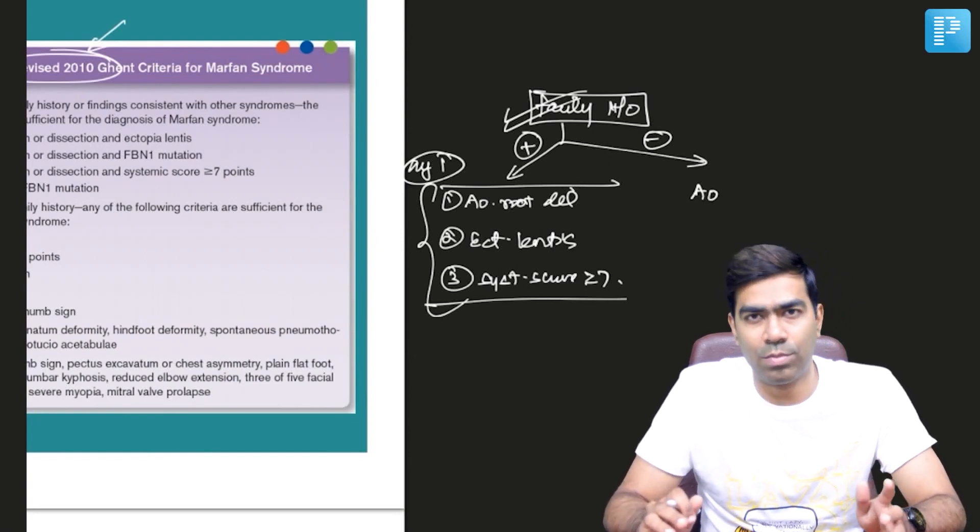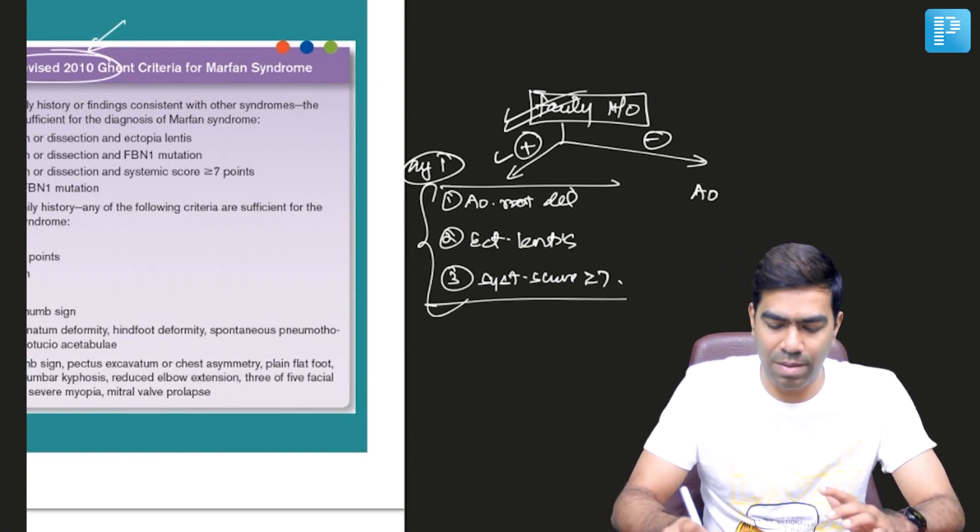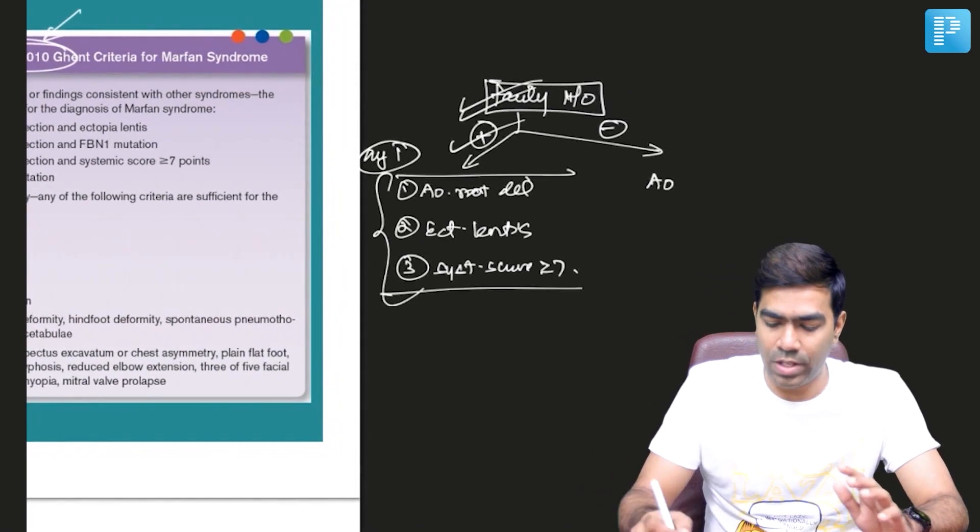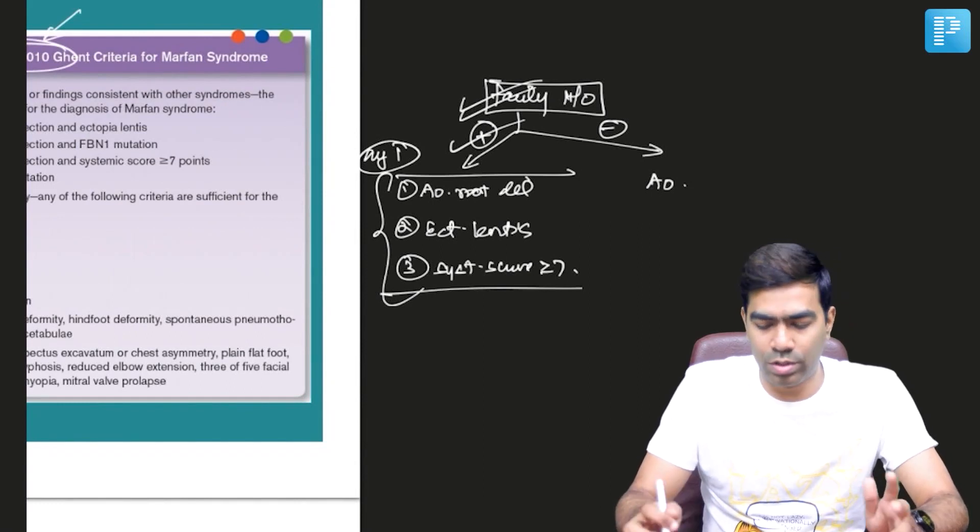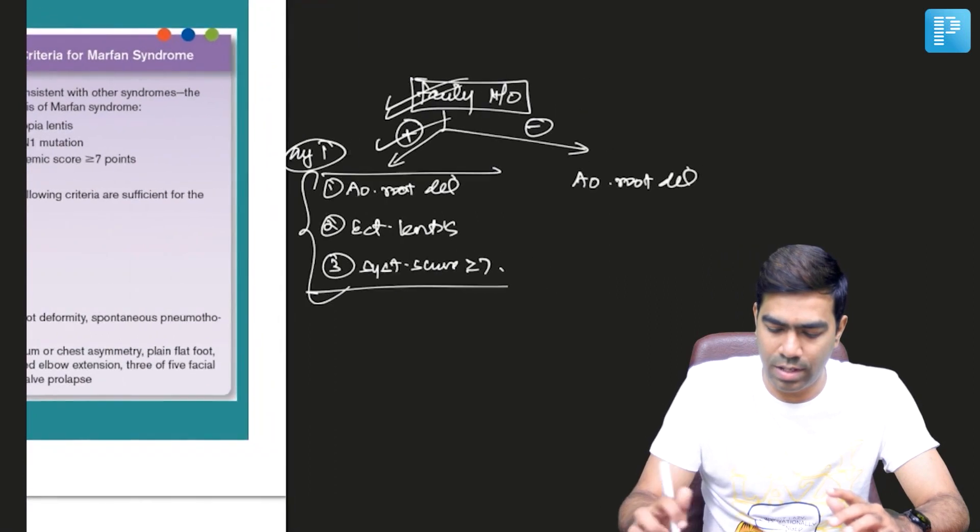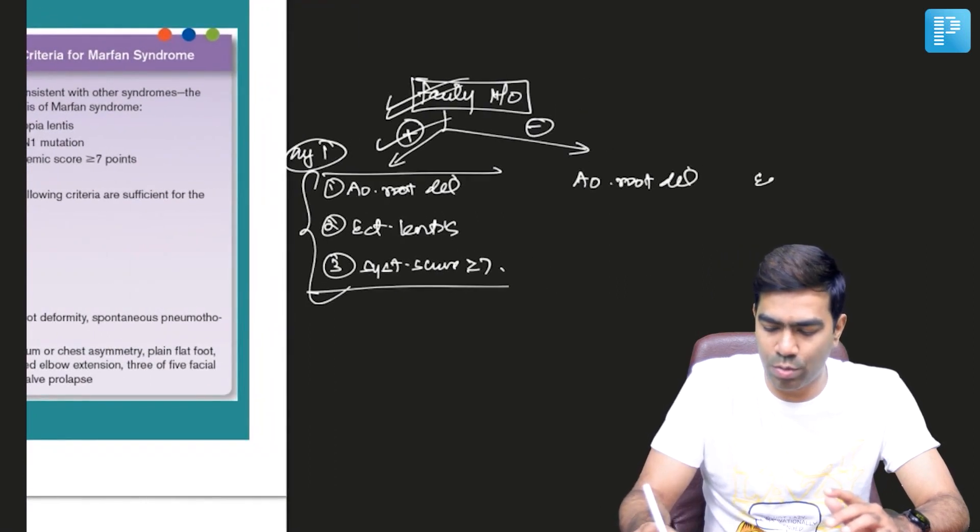If you don't have family history, you need to consider four things together: one is aortic root dilatation, second is ectopia lentis...